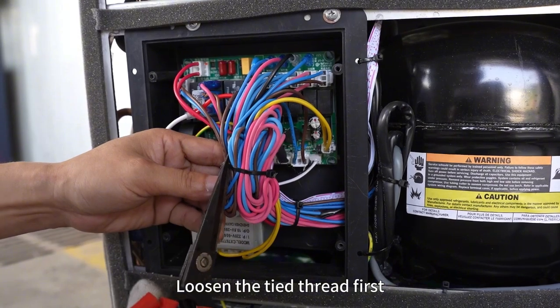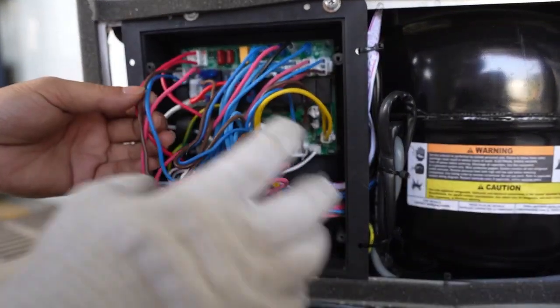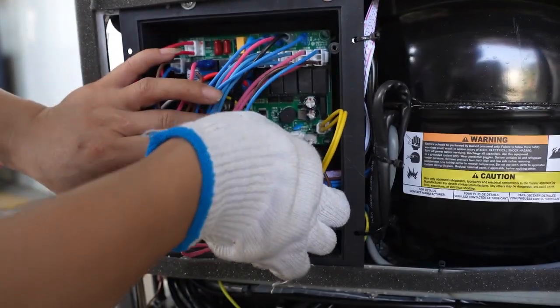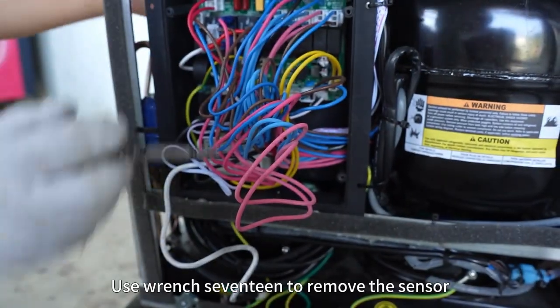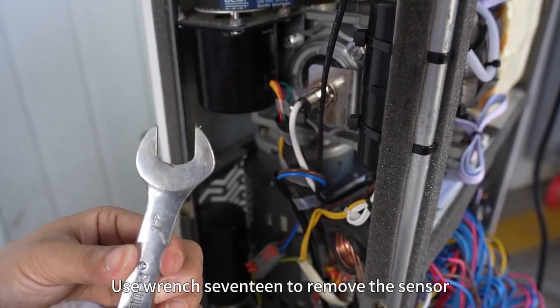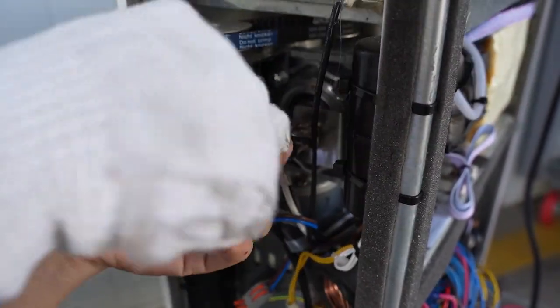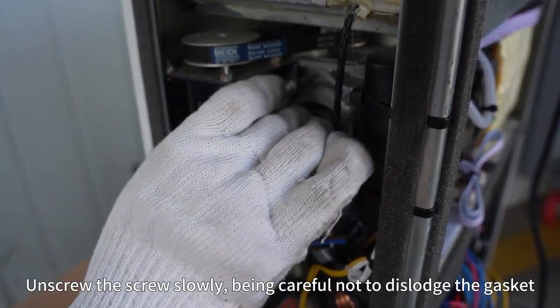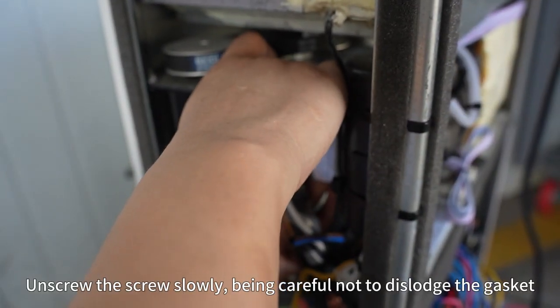Loosen the tight thread first. Unplug the sensor cord. Use wrench 17 to remove the sensor. Unscrew the screw slowly, being careful not to dislodge the gasket.